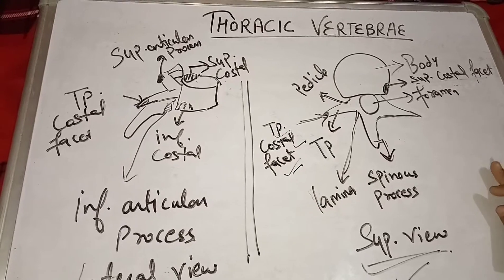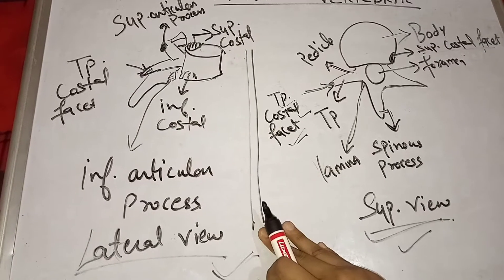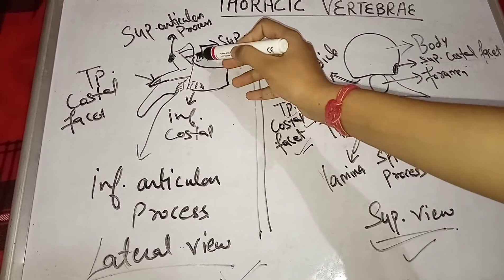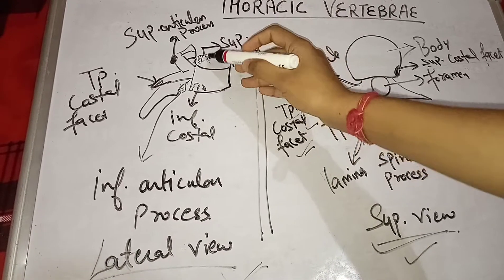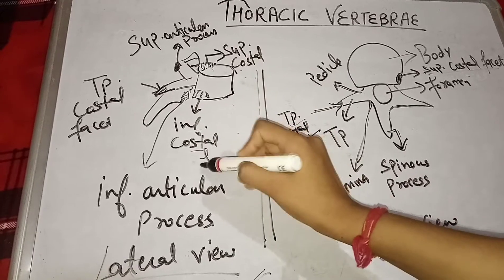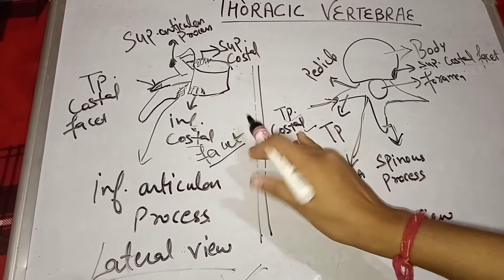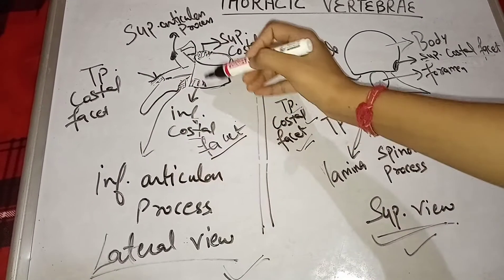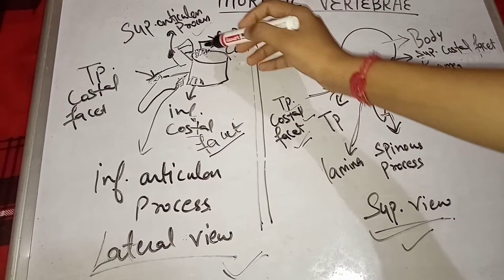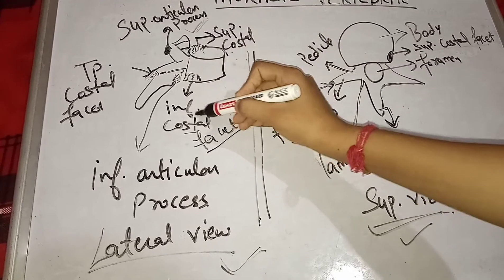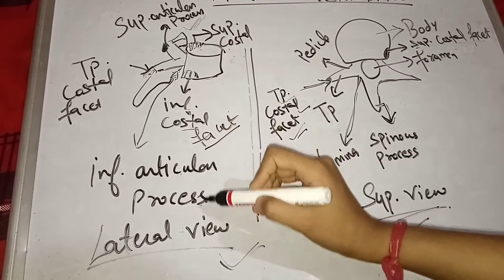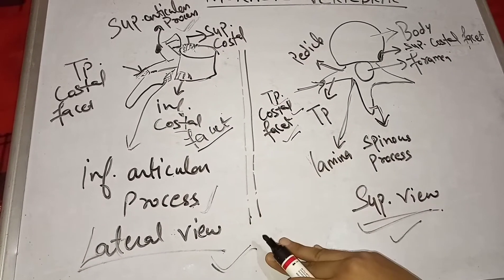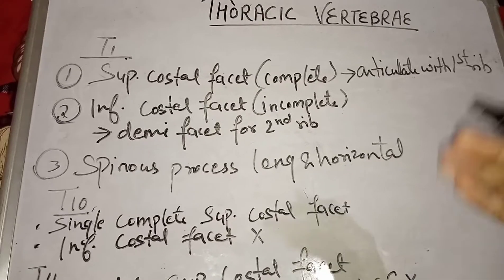Now let's see the lateral view of the thoracic vertebra. There is a superior costal facet which articulates with the head of its own rib, an inferior costal facet which articulates with the head of the rib below it, and a transverse costal facet which articulates with the tubercle of its own rib. Here is the superior articular process which articulates with the vertebra above, and the inferior articular process which articulates with the lower vertebral body.